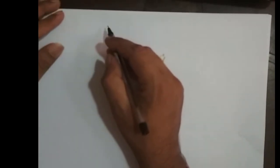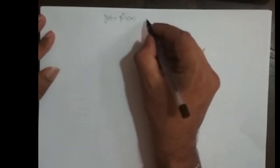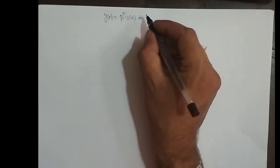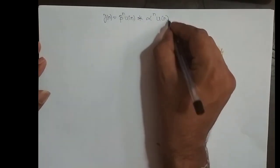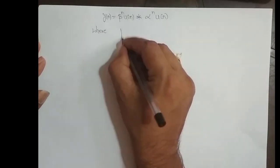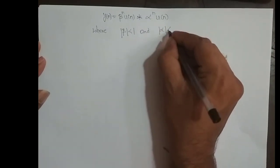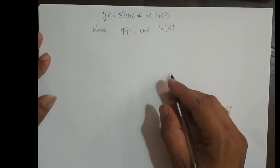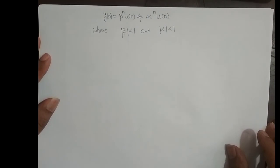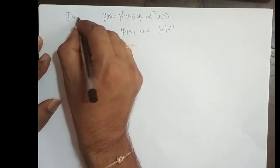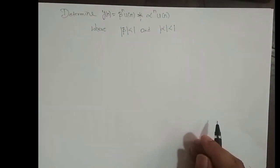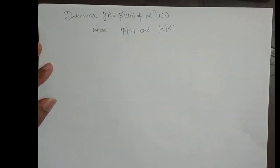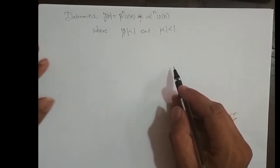We will take up one more problem on convolution sum of an infinite line sequence. This time we will find output y[n] = β^n·u[n] convolved with α^n·u[n], where the magnitude of β is less than 1 and magnitude of α is less than 1. This is nothing but the convolution operator — if they ask you to determine or find y[n] equal to some sequence convolved with some sequence, it is nothing but the convolution sum.